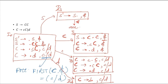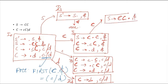From I1 there is no more movement possible. From I2, after the dot one capital C is there, so we can do this transition: S to capital C capital C dot comma dollar. This rule reduces here and we don't need to add anything, so I name this I5.